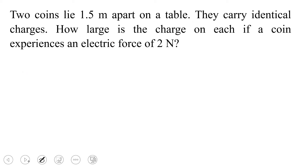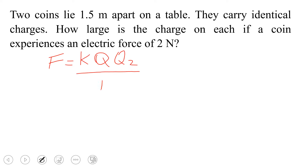Let's move forward again. Two coins lying 1.5 meters apart on a table carry identical charges. How large is the charge on each if the coins experience an electric force of 2 Newtons? The electric force F is equal to the constant of proportionality k times Q1 times Q2 over the distance of separation r squared.